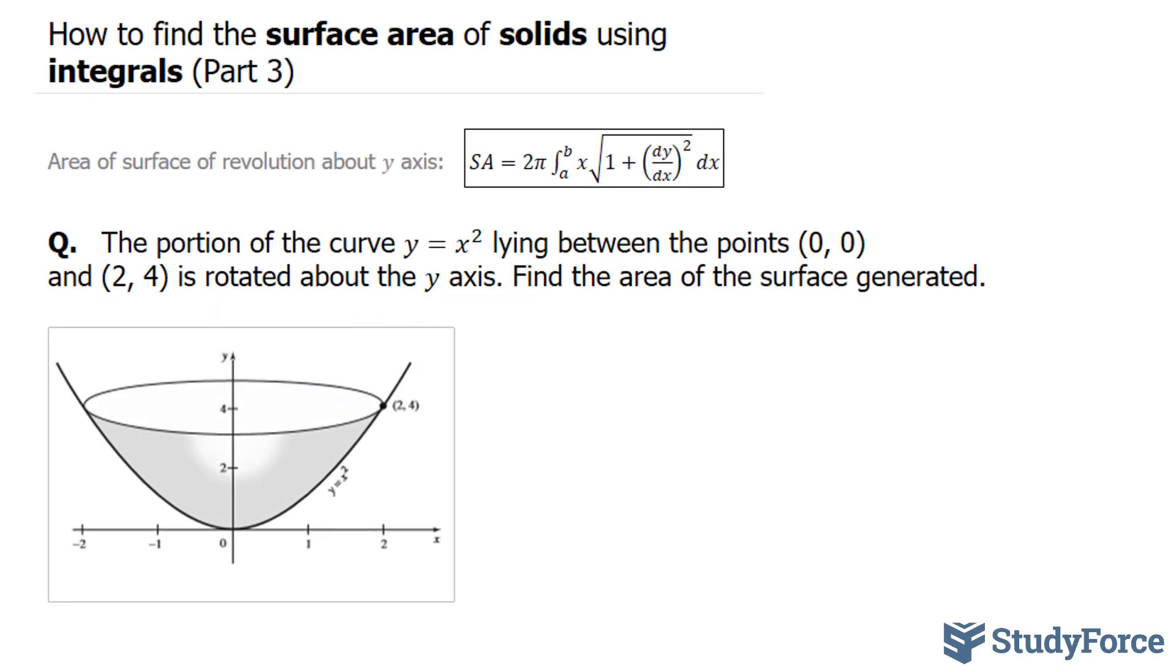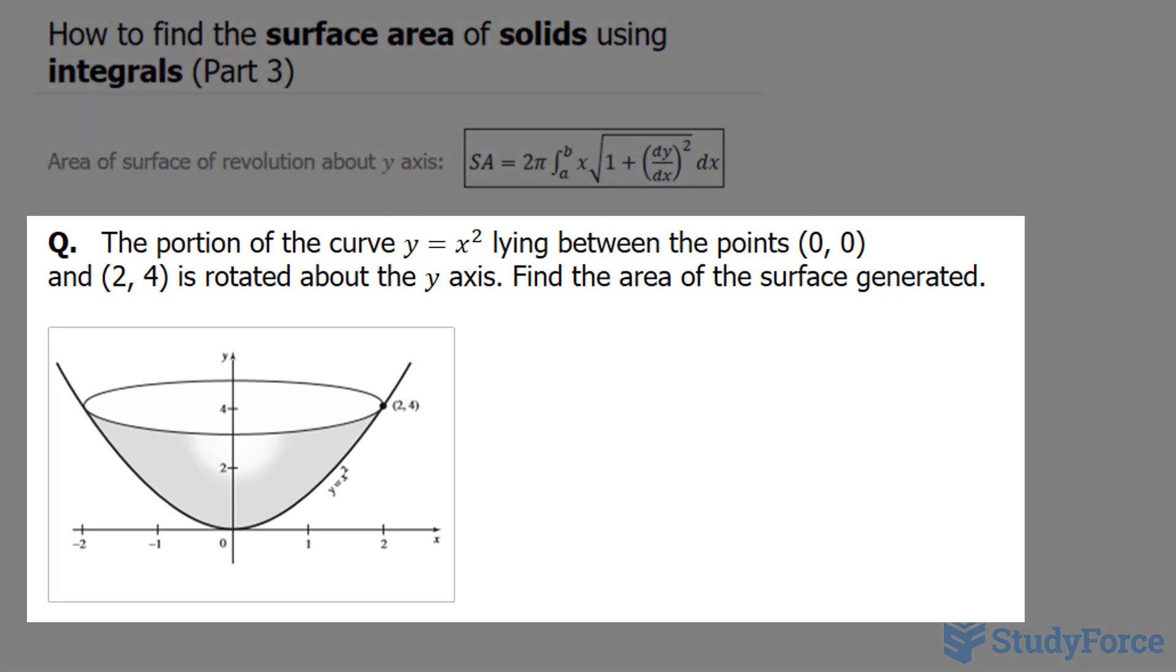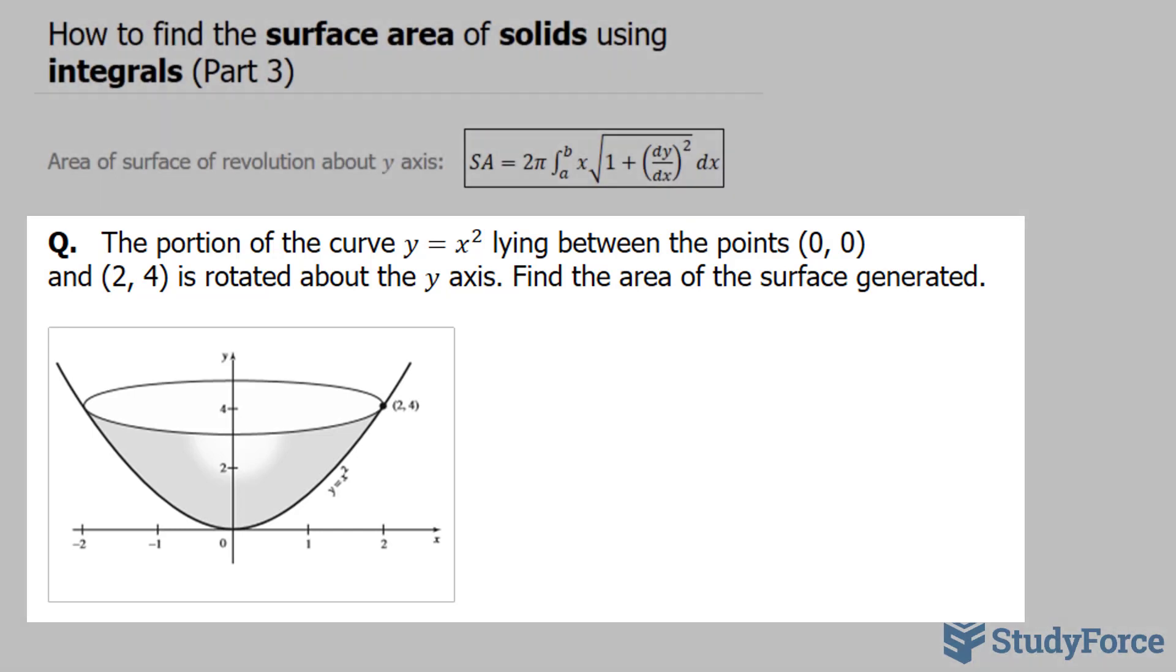In part 3 of this series, we're asked: the portion of the curve y equals x squared, lying between the points (0,0) and (2,4), is rotated about the y-axis. Find the area of the surface generated.